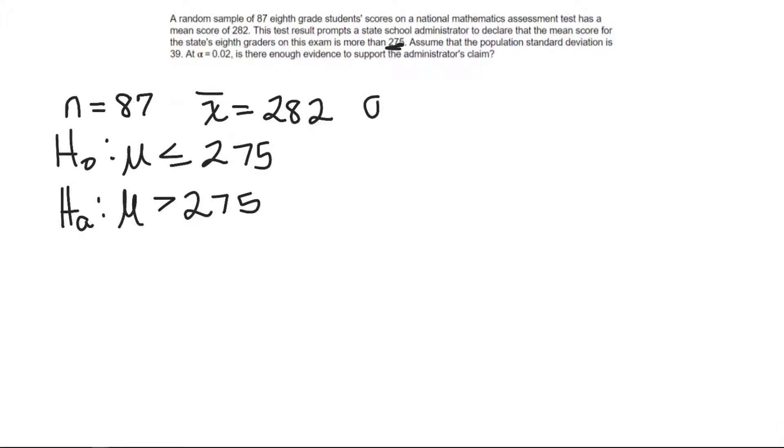So the population standard deviation is 39 and we're going to test this at an alpha of 0.02. So even though you can just throw this in technology and you can just get an answer right away, you should draw a picture of what this means and what you're doing.